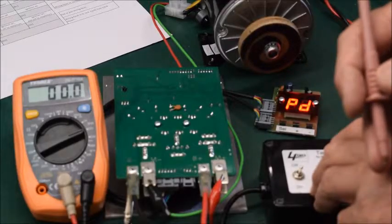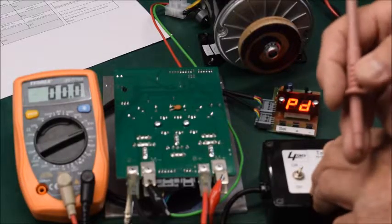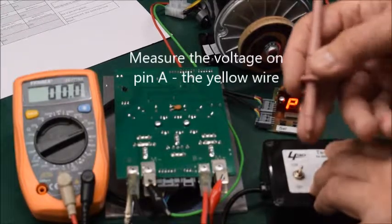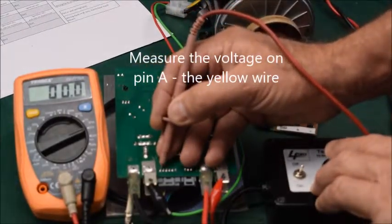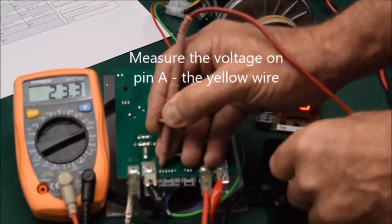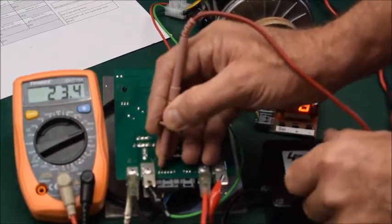Now we're going to measure the voltage on each of the pins of the six way connector. Start by placing the meter red lead onto pin A which corresponds to the yellow wire. This should measure the same as the battery voltage.